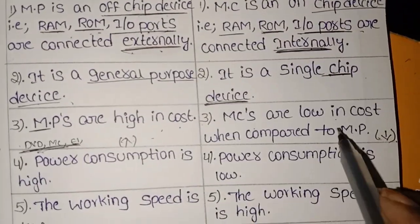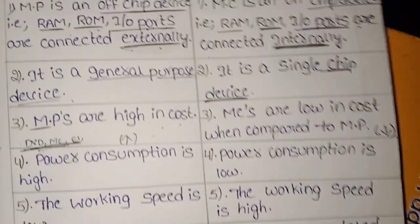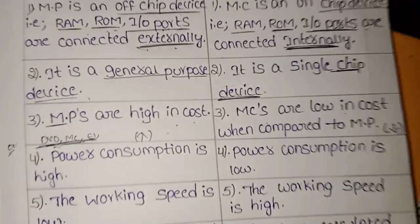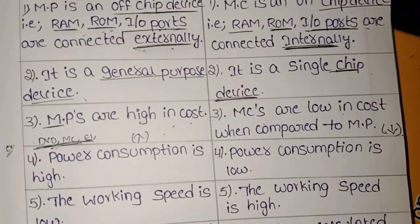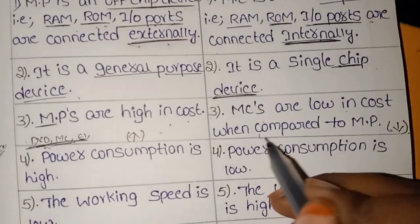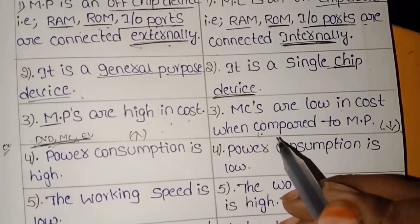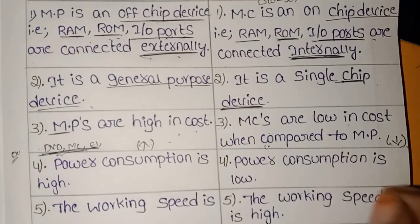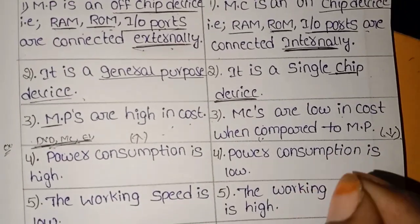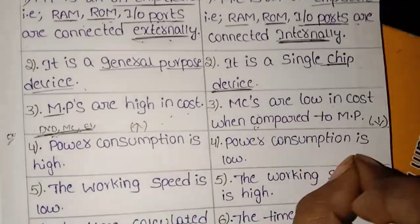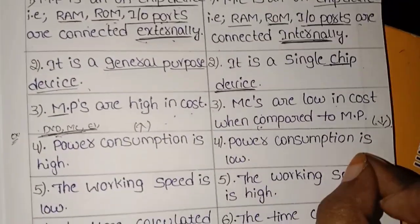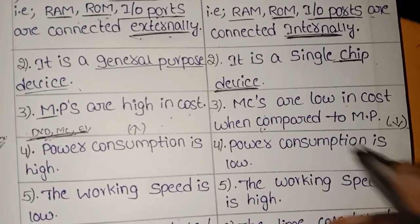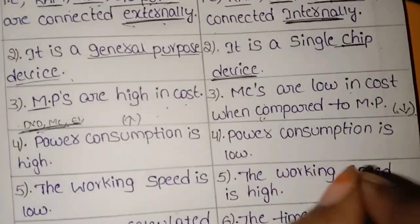These are microcontroller examples: computers, washing machines, and sensors. We can store everything in the computer. In washing machines, there is a time sensor — it has a set time limit.